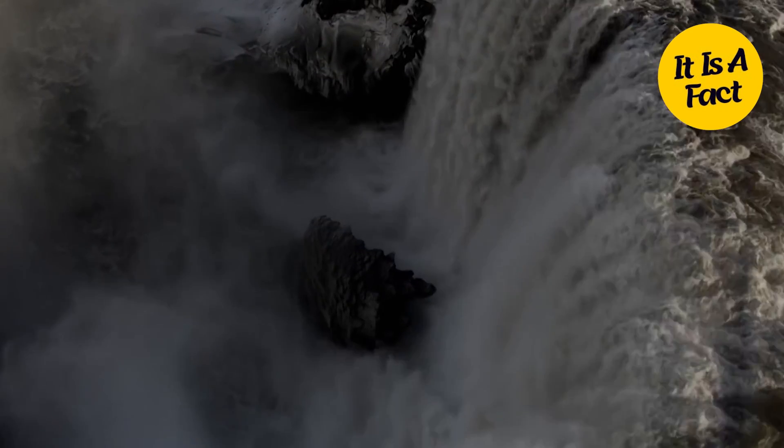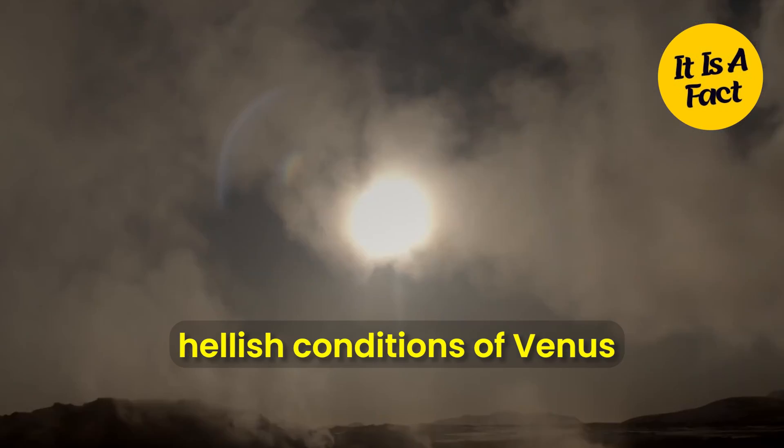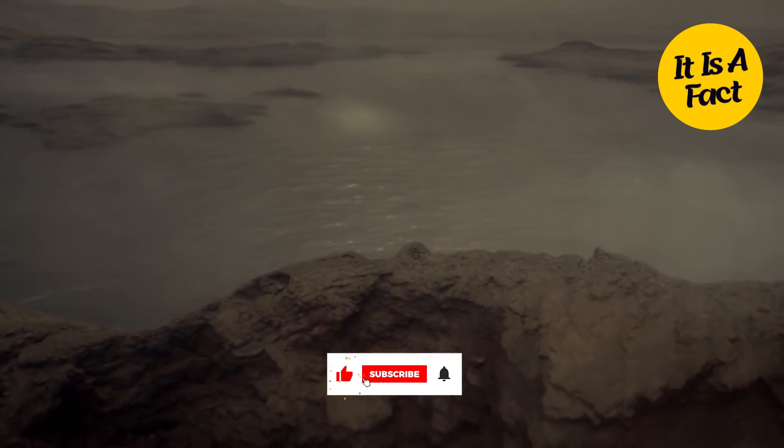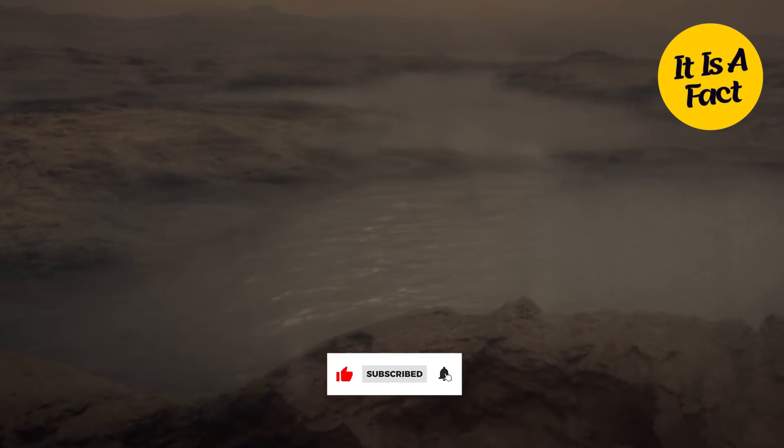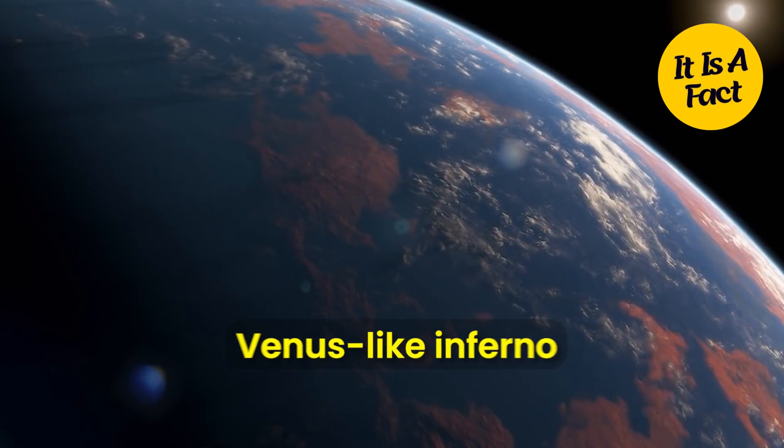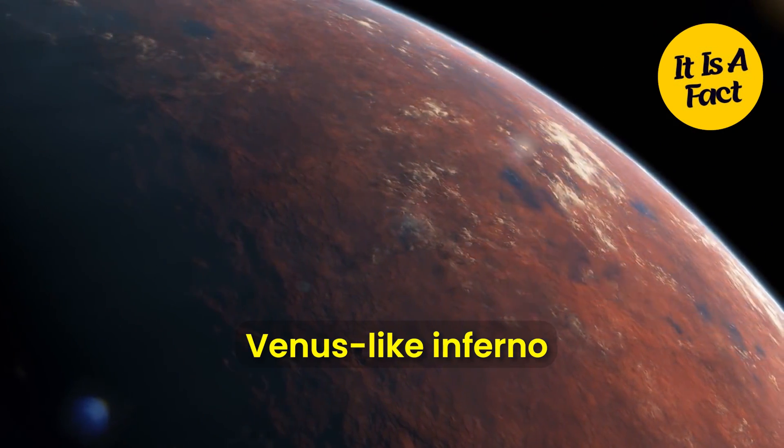With rising temperatures, our planet may mirror the hellish conditions of Venus. A greenhouse effect, scorching temperatures, and a toxic atmosphere could transform our home into an inhospitable wasteland. Will humanity face its ultimate demise in a Venus-like inferno?